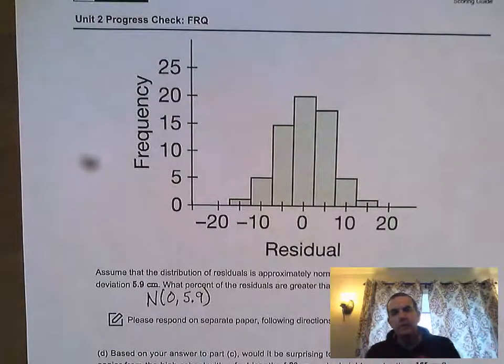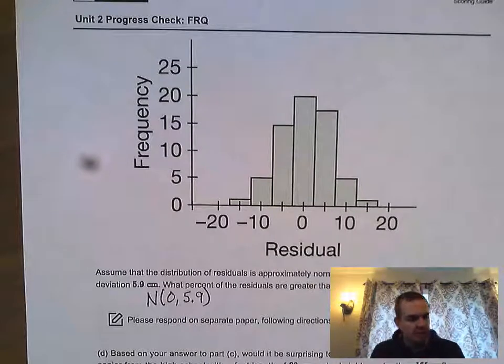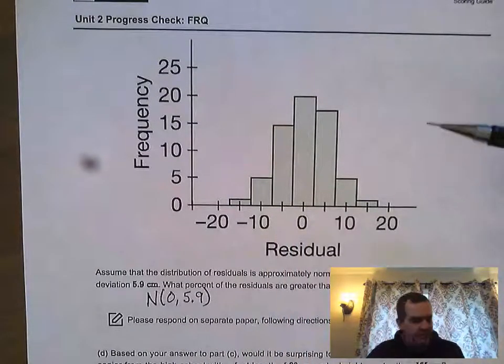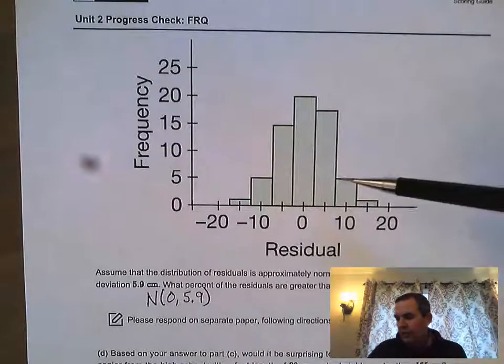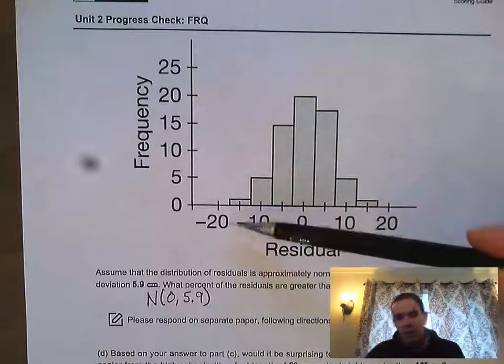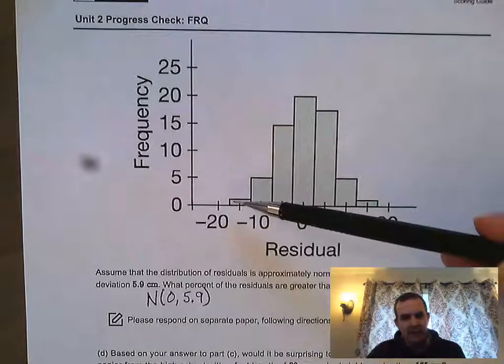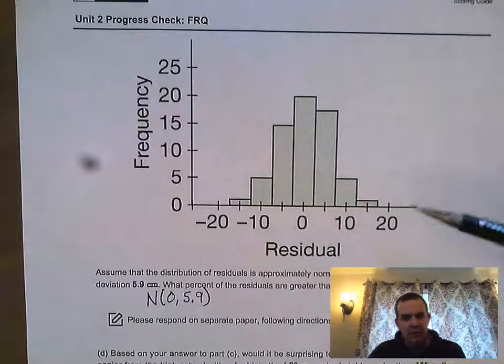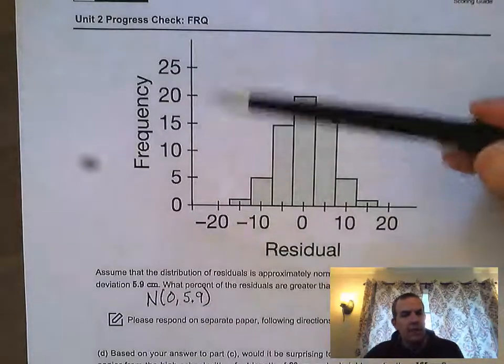This is basically going to answer the final two parts of the question, parts C and D. Parts C and D refer to this residual plot. I went ahead and did a histogram of all the residuals. Our residuals ran from about negative 17 to about positive 17, and how often they happen is our frequency.